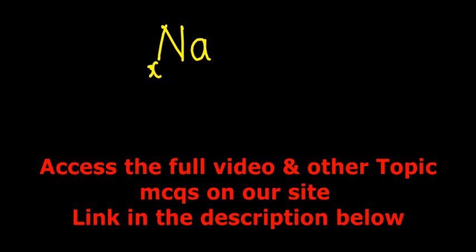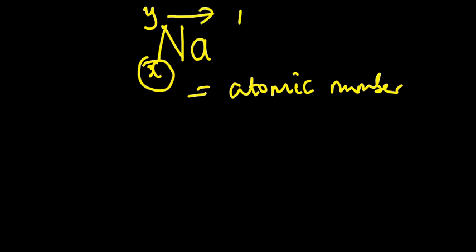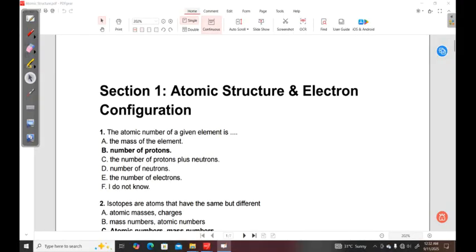let's put this as your X, this is your Y. So this X at the bottom is what we call the atomic number, and the number at the top is what we call the mass number. So the atomic number of a given element refers to the number of protons of that particular element.